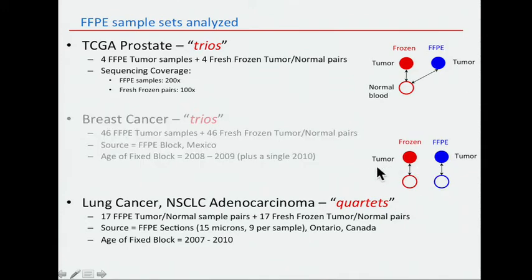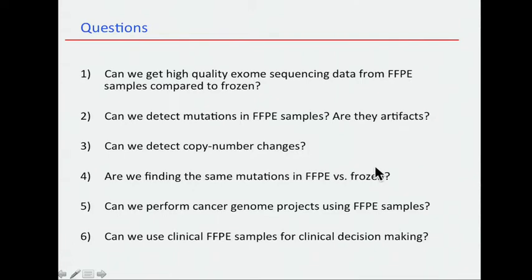So I will talk on both the prostate and the lung. What are the questions we want to answer? There are six questions. Can we get high-quality exome sequencing data from FFPE samples? Can we detect mutations in FFPE samples, and are they artifacts due to the fixing procedure? Can we detect copy number data based on exome sequencing of FFPE samples? Are we finding the same mutations in those trios or quartets between the FFPE and frozen? Can we perform a cancer genome project using FFPE samples? And finally, can we use FFPE in the clinic?